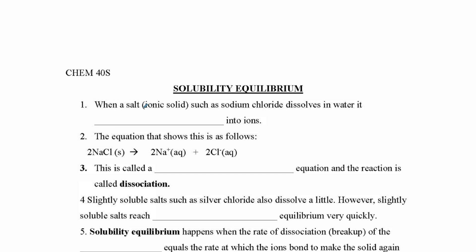We know a little bit about this already from our aqueous reactions unit. When a salt, like an ionic solid such as sodium chloride, dissolves in water, it dissociates, which means it separates out into its separate ions.